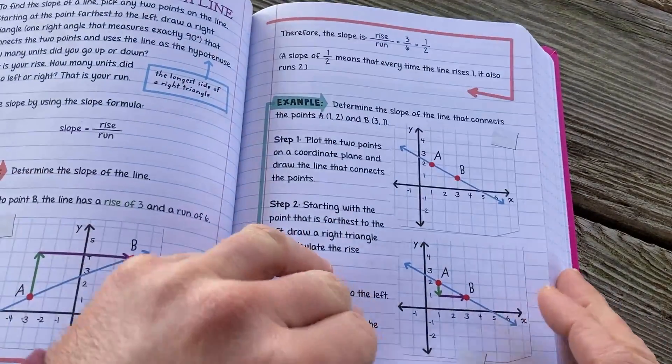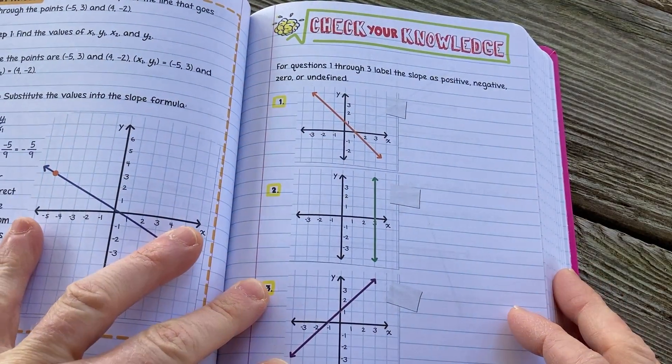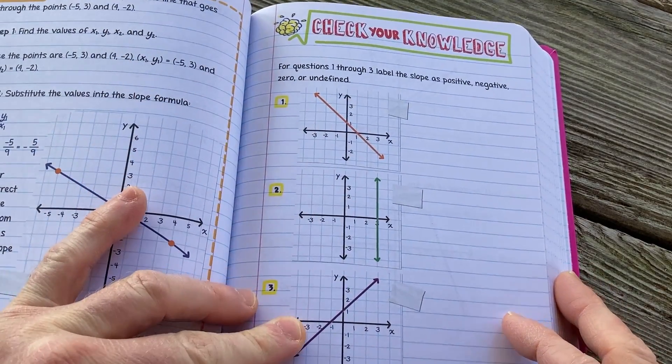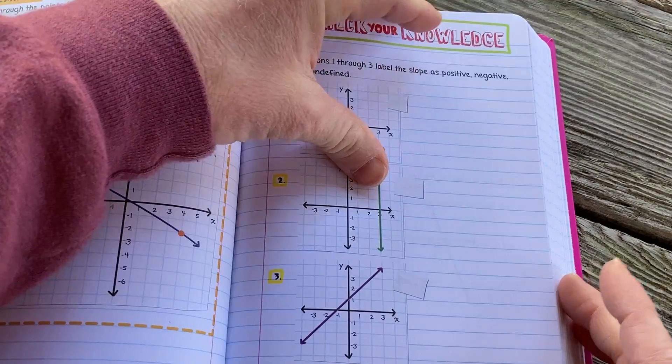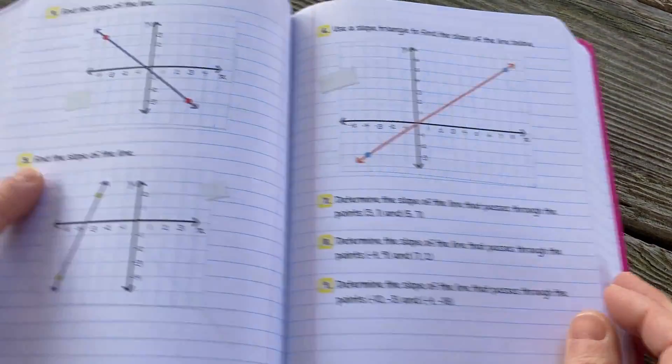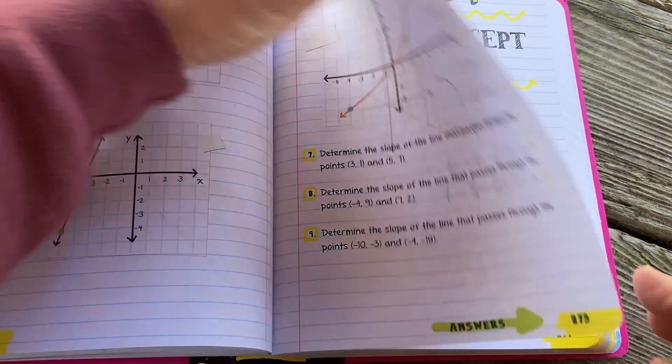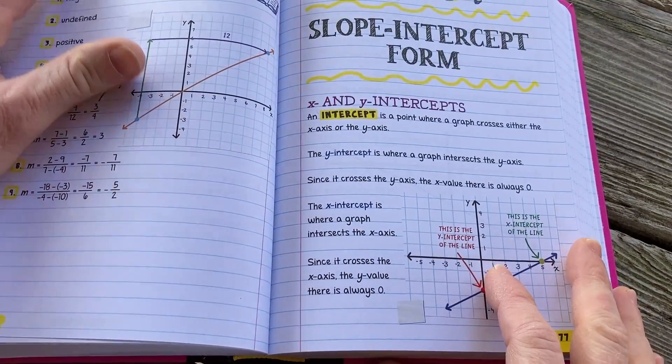And then you keep reading. There's more examples. A pretty big section here. And then check your knowledge. So you have some questions here you answer. You turn the page. Some more questions you answer. And then the answers, you turn the page here. And then you have all the answers right here. So just a perfect book.